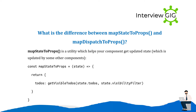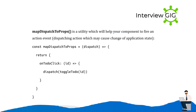What is the difference between mapStateToProps and mapDispatchToProps? mapStateToProps is a utility which helps your component get the updated state: const mapStateToProps = (state) => { return { todos: getVisibleTodos(state) }; }. mapDispatchToProps is a utility which will help your component fire an action event: const mapDispatchToProps = (dispatch) => { return { onTodoClick: () => dispatch(action) }; }.